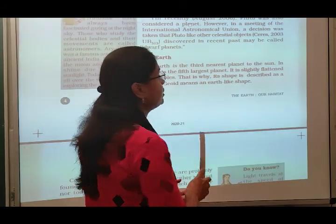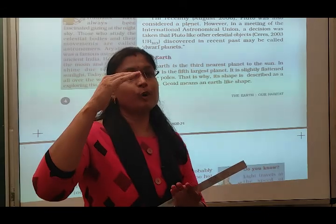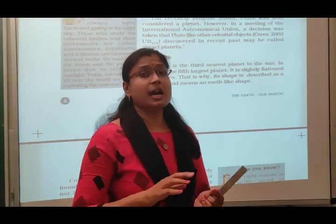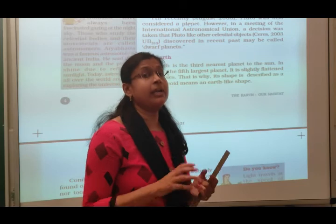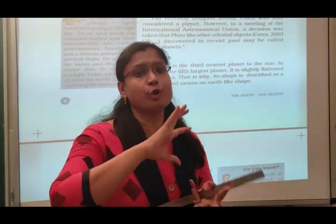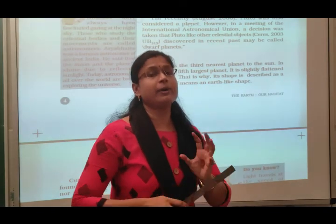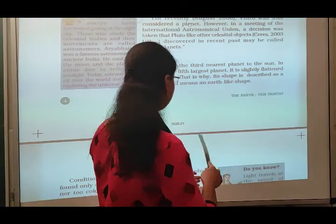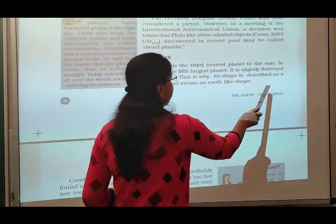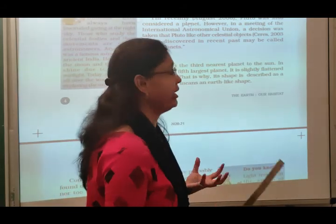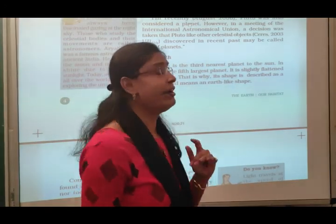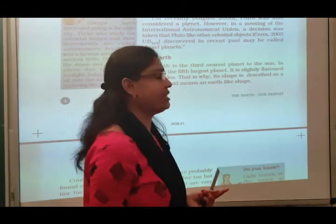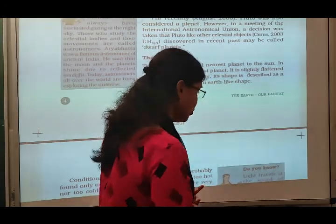The earth is slightly flattened at the poles — both north and south poles. It is not a perfect spherical shape. A football has a spherical shape, but our earth, if we look at the globe, is flattened from the north pole and south pole — थोड़ी सी दबी हुई है. That is why its shape is described as a geoid. Geoid means an earth-like shape — it is not spherical and is flattened on both sides.